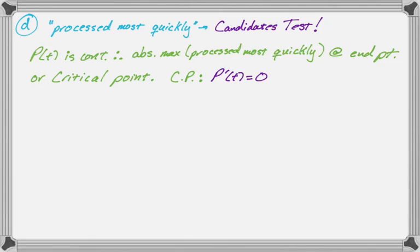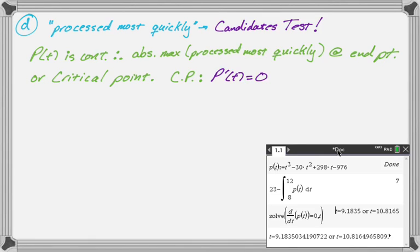Now I need to find the critical points. So I need P prime of t to equal zero. But remember, calculator. So I just had the calculator solve the derivative equal to zero. And the calculator gave me these values, I didn't like how many decimals it gave me, so I made it give me more. And so I'm going to write those down. So we're going to go 9.183503 and 10.816497.